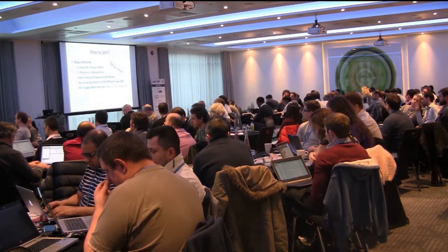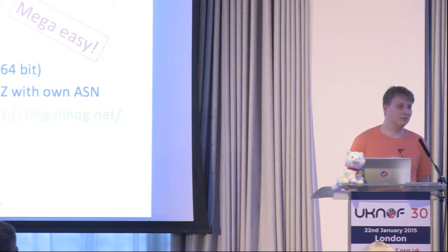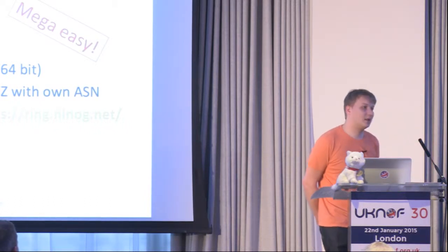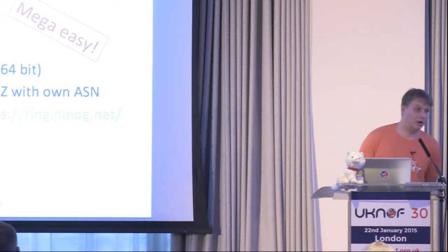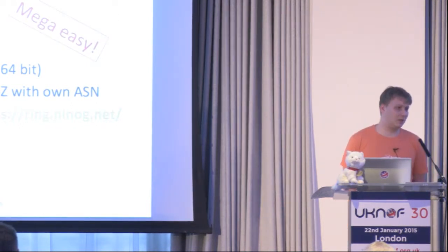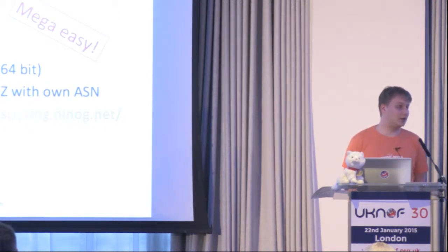Audience question: I was wondering if any of your nodes had access to BGP tables, because that would be a very useful tool. The ring operates a centralized looking glass. It's optional to set up a BGP feed. So far we have 55 full BGP feeds, and you can access that data anytime you want.